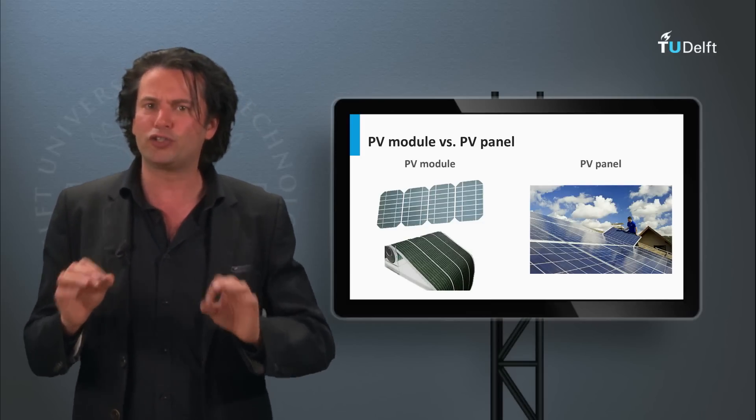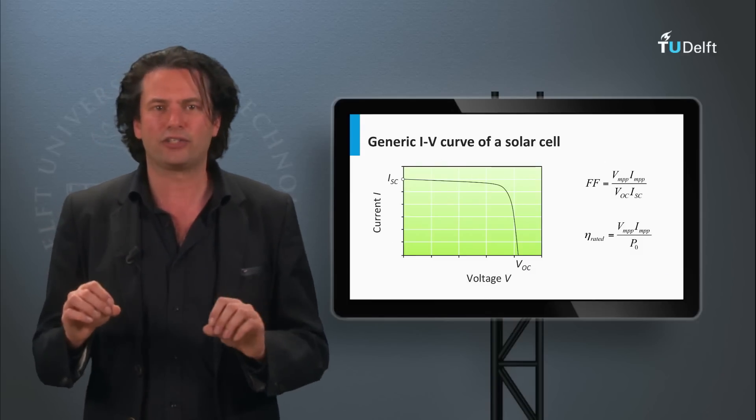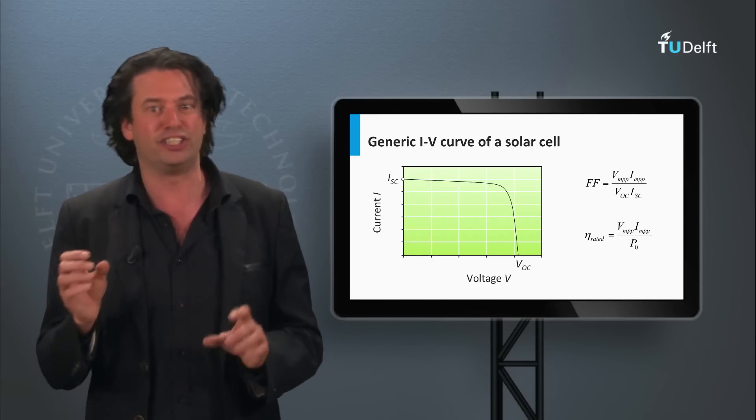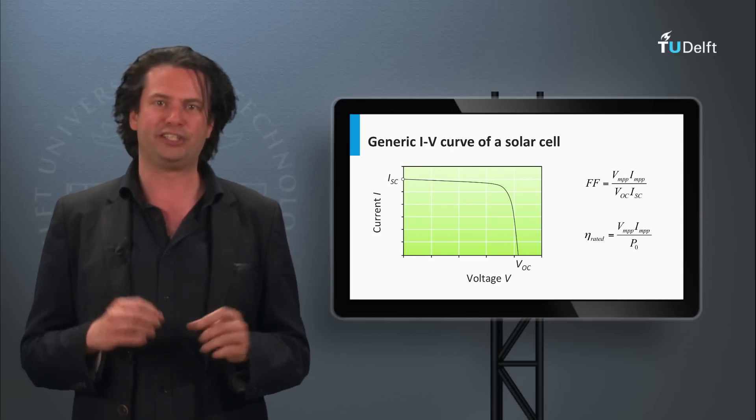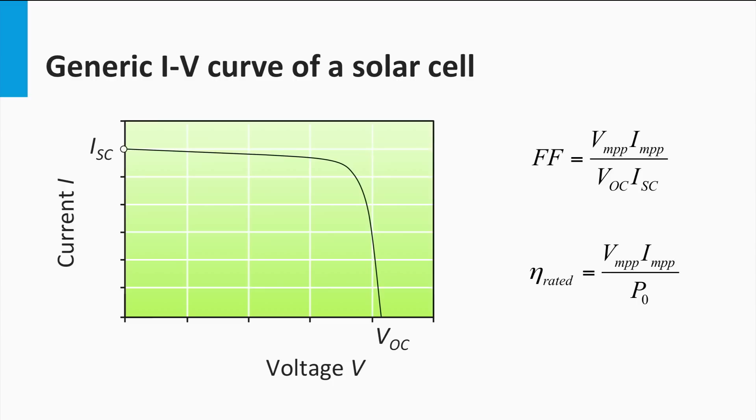So let us move on to the module level concepts. First of all, I would like to introduce a new term, the IV curve. So far we have been discussing the JV curve at the solar cell level, J being the current density, current per unit area. But at the module level, the total current that the module can generate is of more interest. Hence, we look at an IV curve, or the current voltage curve. As the area is a constant, the IV and JV curve of the solar cell or solar module will have identical nature.